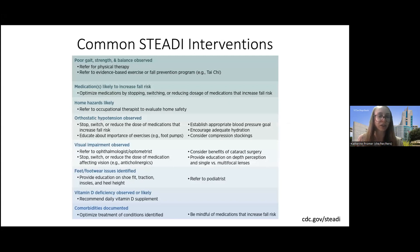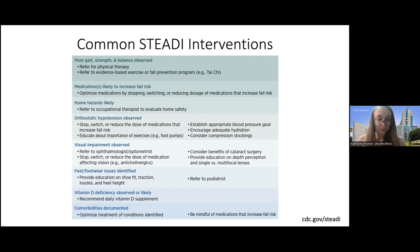Common specific interventions: for strength and balance issues, physical therapy and Tai Chi actually have evidence to support fall prevention. Deescalating or discontinuing medications that contribute to fall risk. Home hazards: asking about loose rugs, stair railings, a grab bar in the shower — there are low-income resources if patients can't install those themselves. Educating about compression stockings for orthostatic hypotension, adjusting medications, referring to ophthalmology, optometry, podiatry for footwear. There's a lot that can be done — it's knowing about the resources, referring them, and convincing the patient to actually use them.